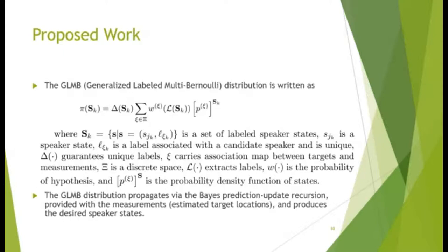The generalized labeled multi-Bernoulli tracking method has been used in multi-target tracking literature but not often in audio or speech applications. For a brief introduction, the GLMB distribution can be written as this equation where SK is a set of labeled speaker states. SJK is a speaker state where L is a label associated with the candidate speaker and it is unique, and delta SK guarantees unique labels.